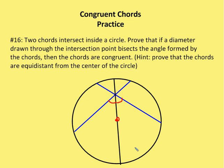I've drawn my diagram — that's really the first part of the problem. I have two intersecting chords. The diameter bisects the angle of the chords, so these two angles are congruent. Now I'm going to draw two segments from the center to the two chords. I know that these angles are going to be right angles, and by definition the distance between the center and a chord is congruent.